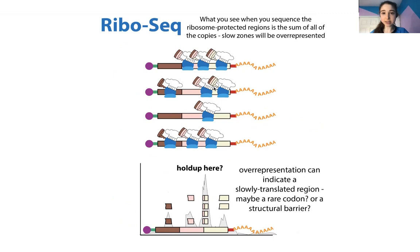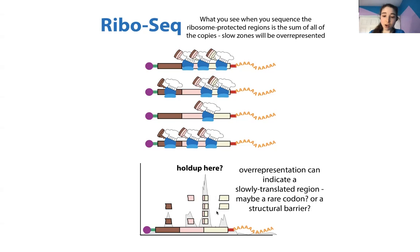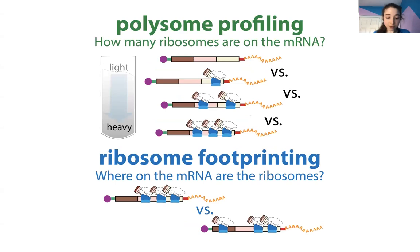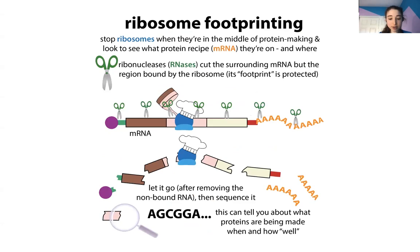When you sequence the footprints, you see the sum of all copies: slow zones are over-represented, like the sharp curve on the 'It's a Small World' ride where boats pile up. Over-representation can indicate a slowly translated region, possibly due to a rare codon — making it hard to find a matching tRNA — or a structural barrier in the messenger RNA. To assess translation efficiency, you compare the ribosome footprint sequencing data to the total number of messenger RNA copies.